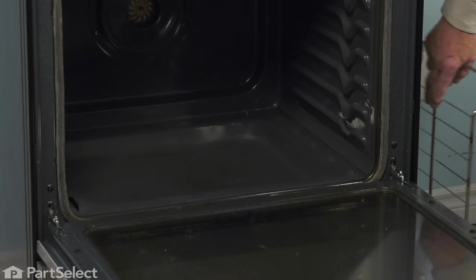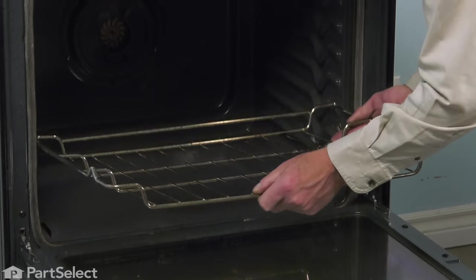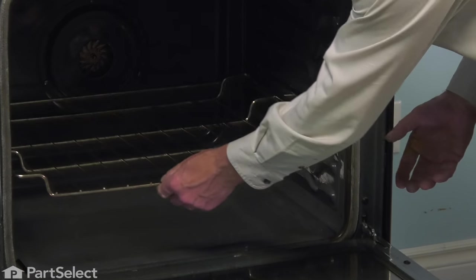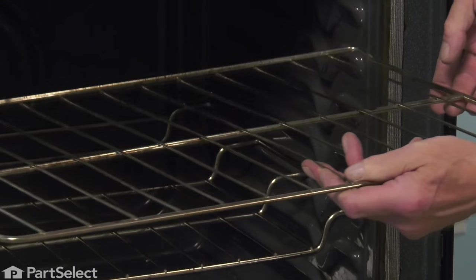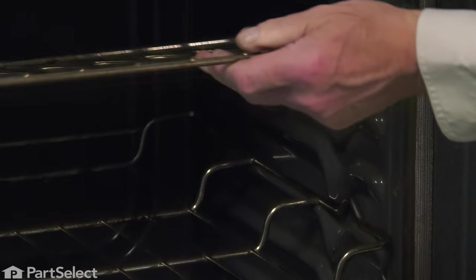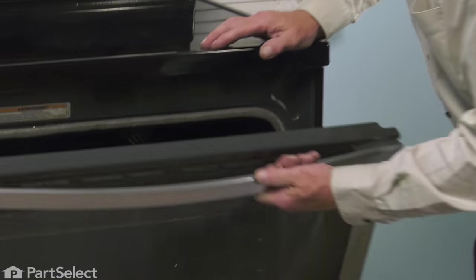We're ready to go to the front of the range and we can put the racks back in. We'll begin by opening up the door. Position the racks where you prefer them. You can close the oven up.